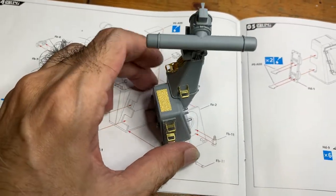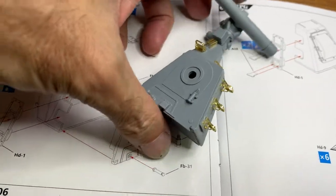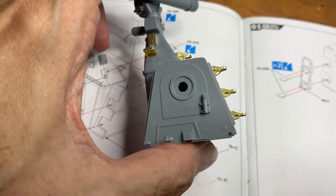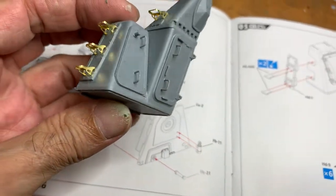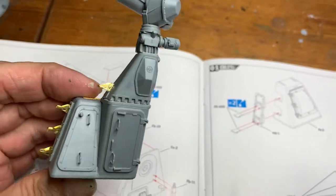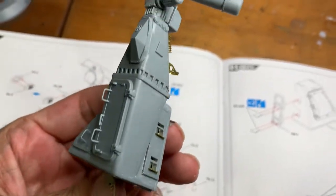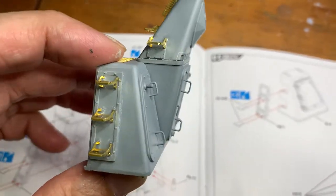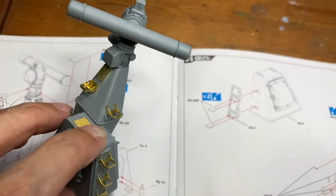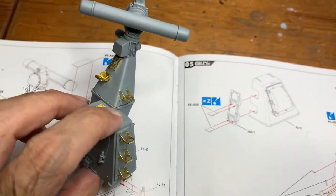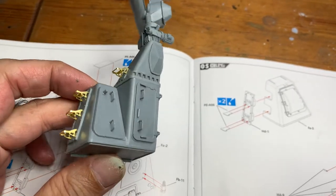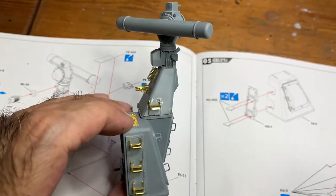Everything has been assembled, including the photo etch. I found this to be quite straightforward, nothing too difficult. The photo etch is very thick, so easy to work with.